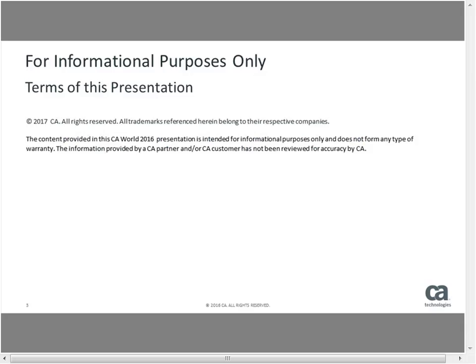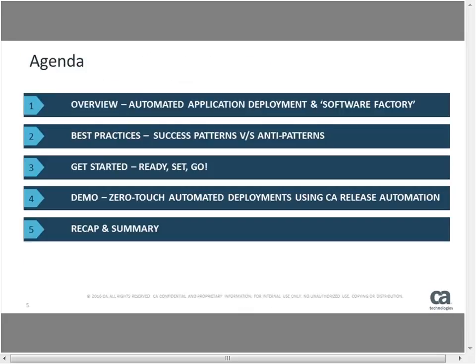So how do we get there? What's the agenda? We'll quickly touch on the notion of automated application deployment and how it relates to the bigger picture of an optimized software factory. How does automated application deployment help you put it all together in a software factory model? Then we'll go into best practices — things we should be doing — looking at the market and customer profiles to see what's working for them. Those are the success patterns, and more importantly, the things you should not be doing.